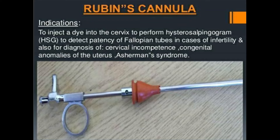Rubin's cannula is another very important instrument used to inject dye into the cervix to perform a hysterosalpingogram to detect the patency of the fallopian tubes in cases of infertility, and also for the diagnosis of cervical incompetence and congenital anomalies of the uterus.